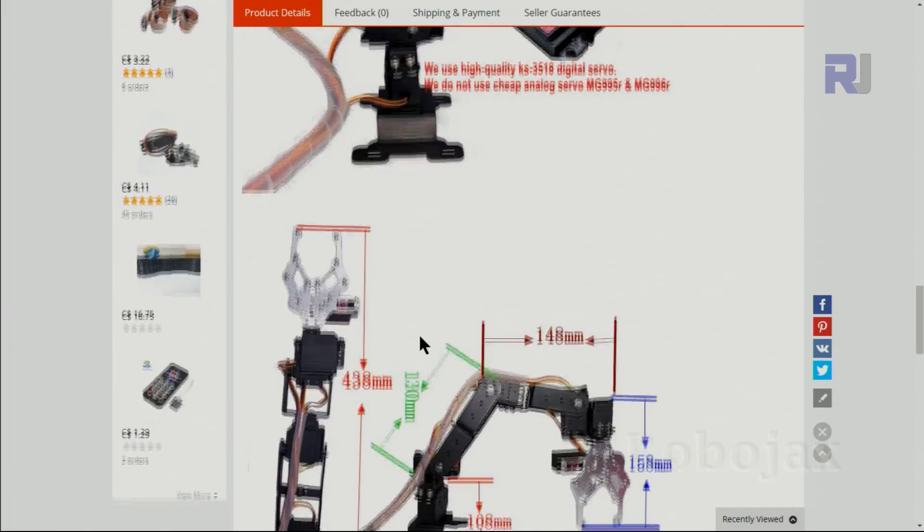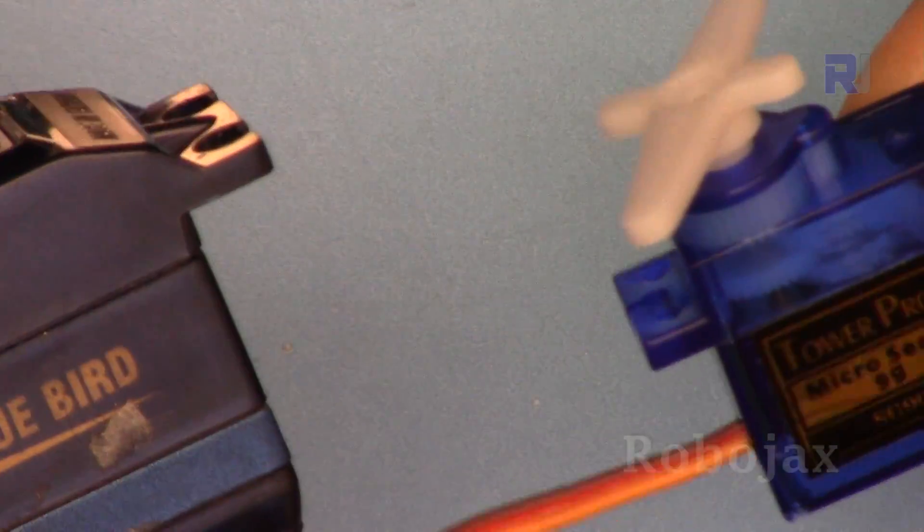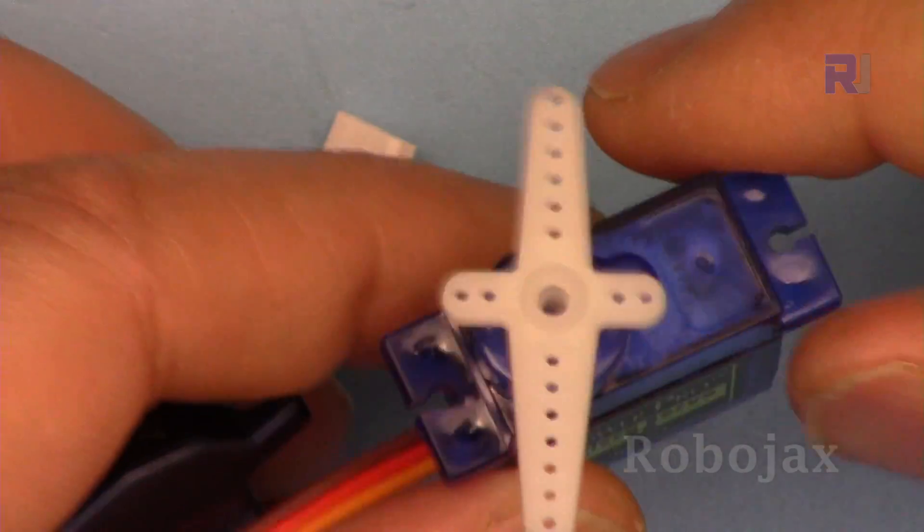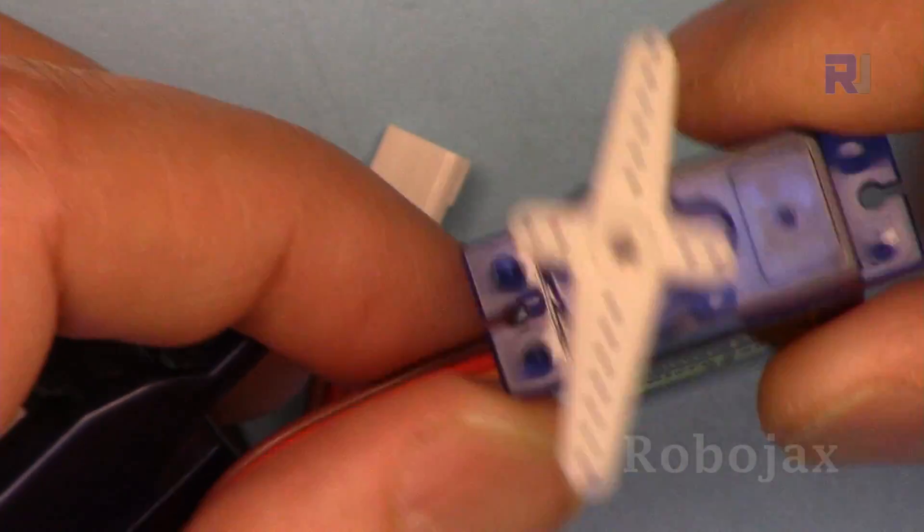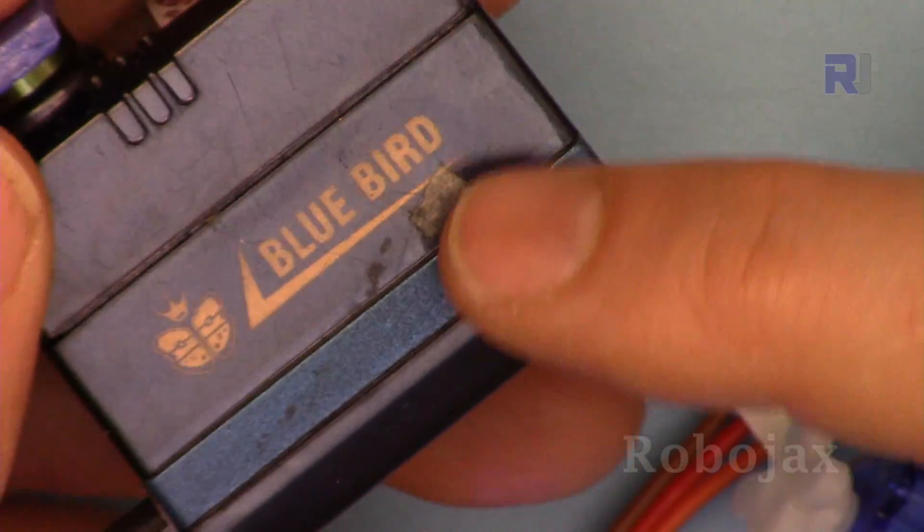This is a servo motor, also this is very large compared to this micro servo I'm going to display. The amount of torque that each generates will determine the quality and the price of the servo and also the size. For example, this can be used for the steering of a very powerful RC car, but this would be for small airplane or a small RC car.